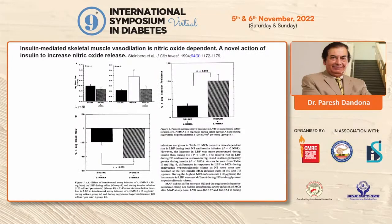In skeletal muscle, vasodilatation is also nitric oxide dependent and insulin mediated. If you have insulin, you get vasodilatation and an increase in flow, but if you have insulin resistance or you block nitric oxide release, you do not get vasodilatation.